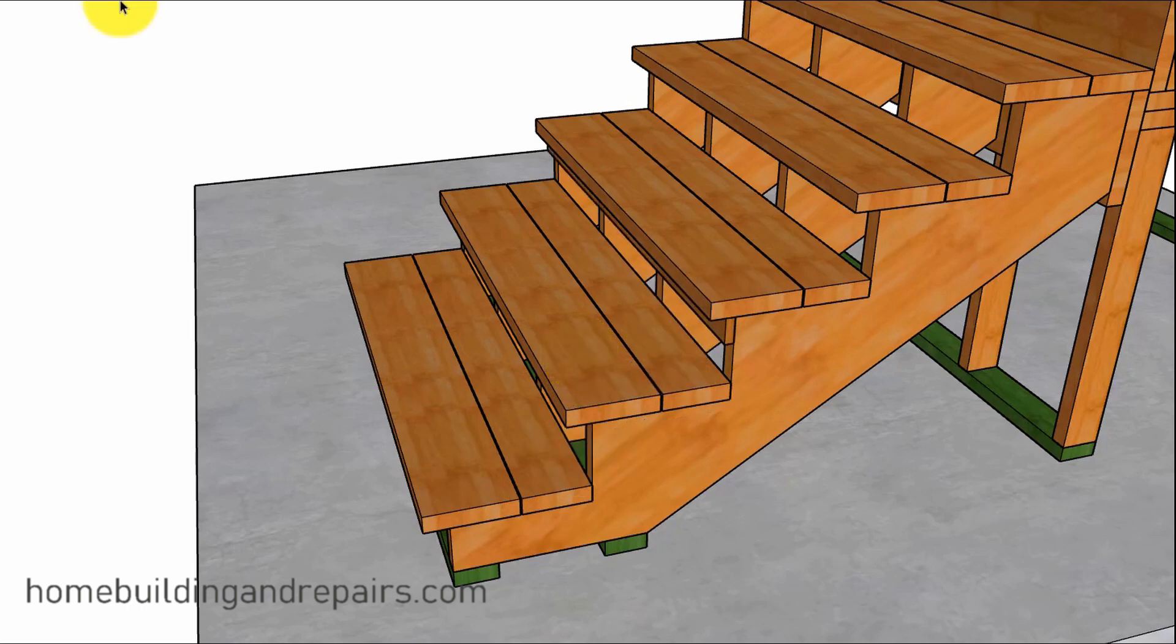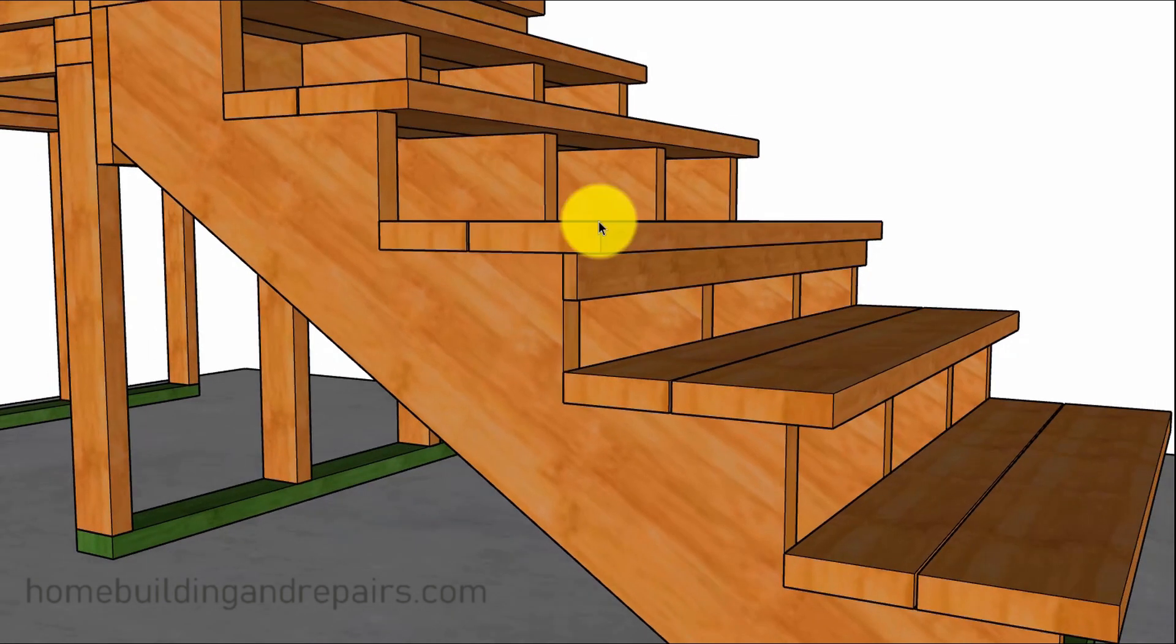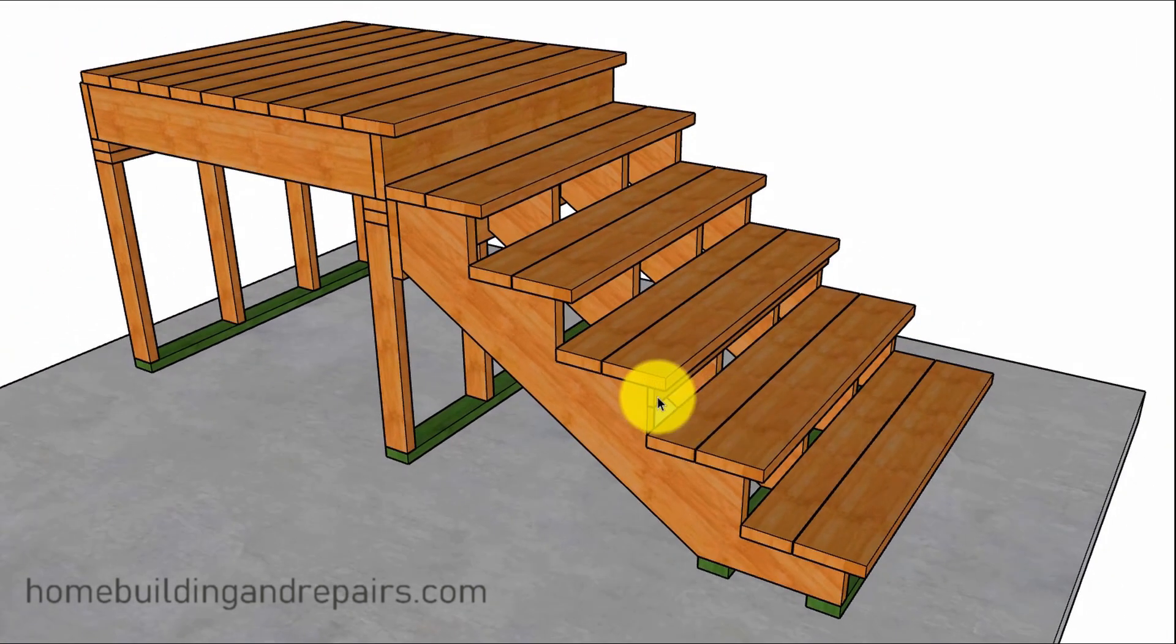Something else I need to point out is that even though the building code refers to a closed riser or solid riser, you are going to need to build your stairs so that if you have the overhang, you're going to need to refer to another building code. And that is the fact that you cannot pass a 4 inch round sphere or ball through. You're going to need to have a board either at the top or the bottom, some type of design that is going to prevent the sphere from passing through any section of the stairway. And this includes the handrail system also.